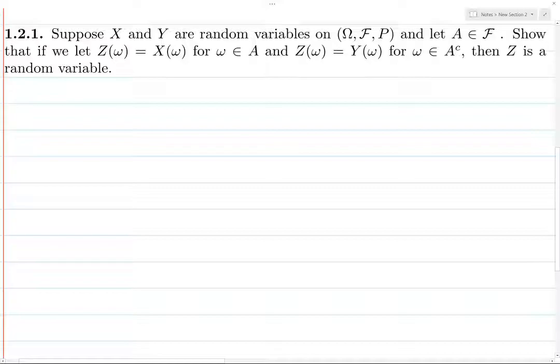So again, random variables are just measurable functions from some measure space into the real line with the Borel sigma algebra. Measurable functions, I don't think that's defined in this section, but in measure theory a function from one measure space to another is measurable if the inverse image of any measurable set in the codomain is a measurable set in the domain.